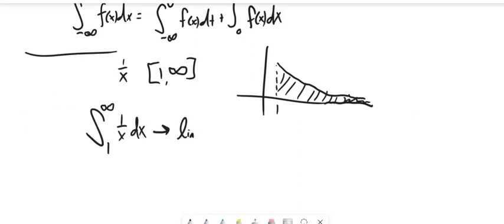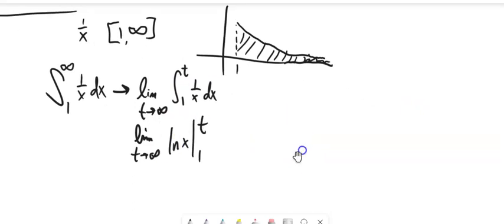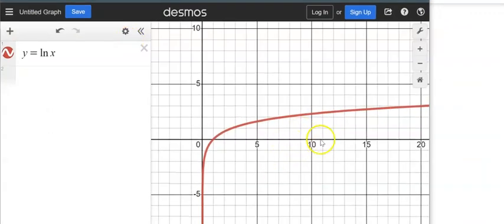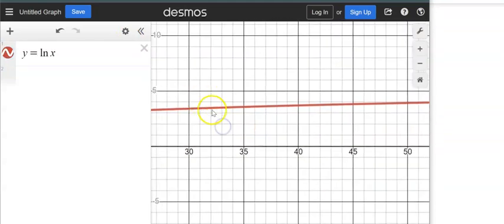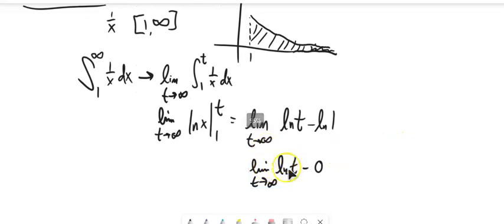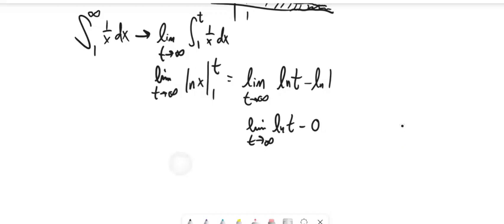We're going to think of that as a limit — the limit as t approaches infinity. We know how to do that integral, so it's the limit of natural log evaluated from 1 to t. We know that natural log of 1 is zero. Now we have to think about the natural log of really big numbers. If I think about the graph of natural log, as the input keeps getting bigger, natural log keeps going up — it will always increase. Because it undoes e, it's the inverse of e. Since natural log grows without bound and doesn't have an asymptote, this diverges — it goes to infinity. So we have infinity minus zero, and we say that this diverges.